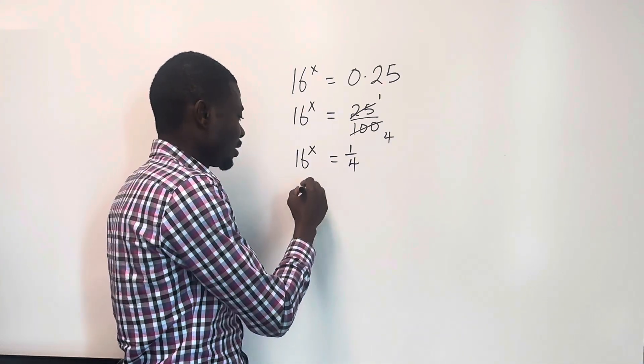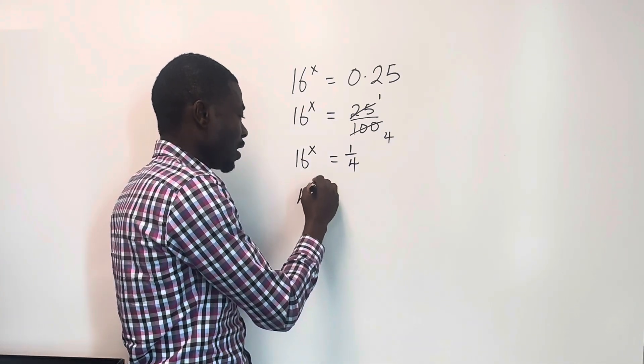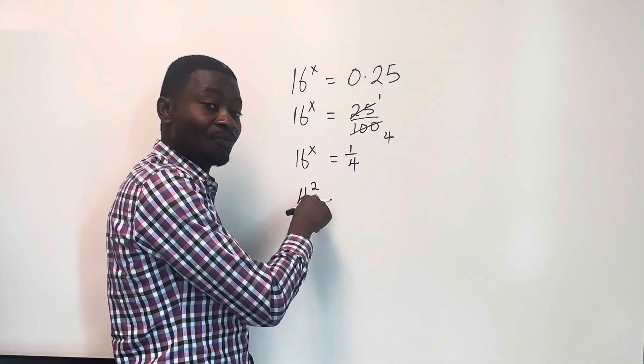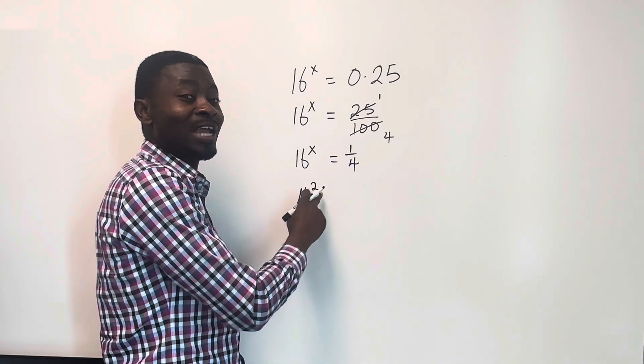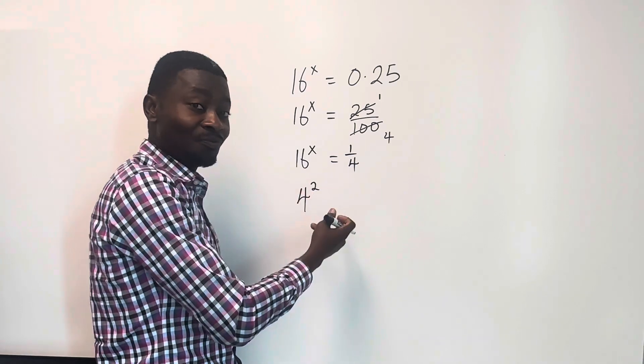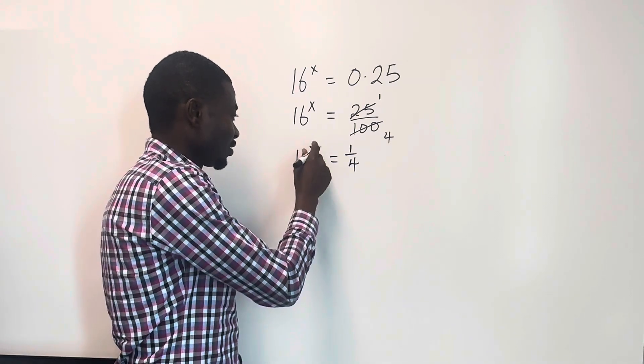So now, this is sixteen. Now, we know that 4 raised to the power of 2 will give me sixteen. This means 4 times 4. That is what this means. This does not mean 4 times 2, but 4 times 4. And 4 times 4 will give us sixteen.